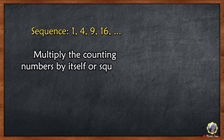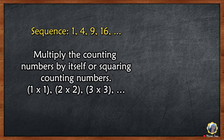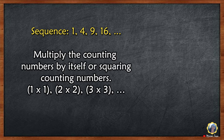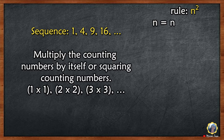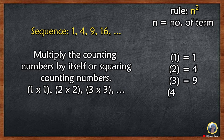Another example: sequence 1, 4, 9, 16, and so on. Multiply the counting numbers by itself, or squaring counting numbers. 1 times 1 is 1, 2 times 2 is 4, 3 times 3 is 9, and so on. Rule: n squared. N is the number of term.